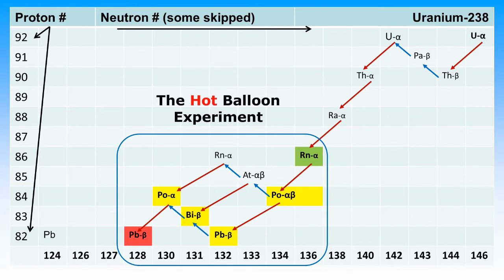Radon-222 alpha decays to polonium-218. Polonium is a heavy metal once again. Polonium-218 has two decay modes. The majority are alpha decay. So we won't discuss the beta decay to astatine-218 and then to radon-218. The polonium-218 alpha decay moves us to lead-214.